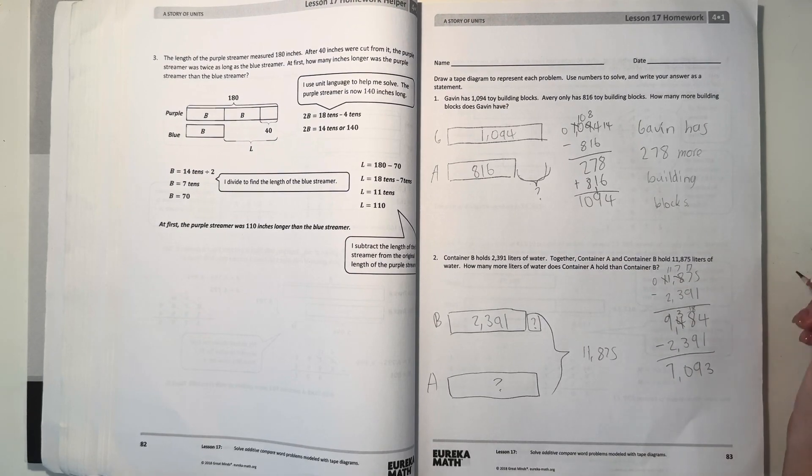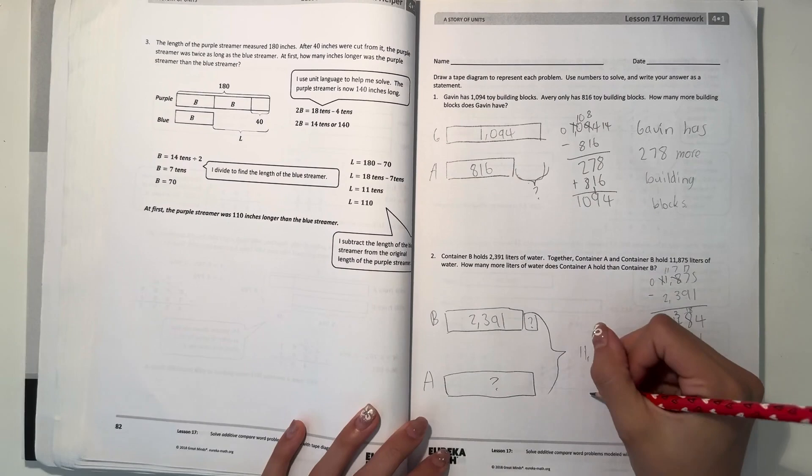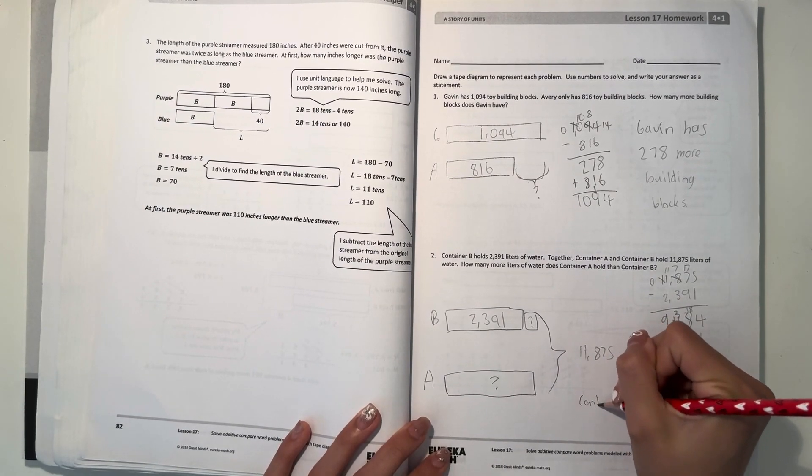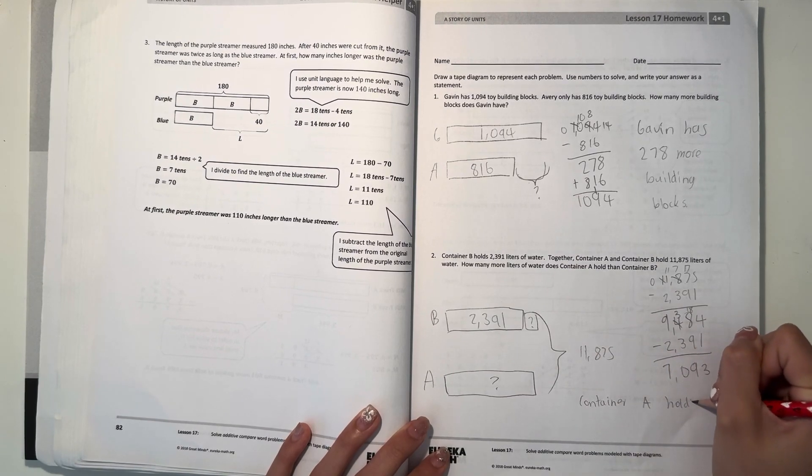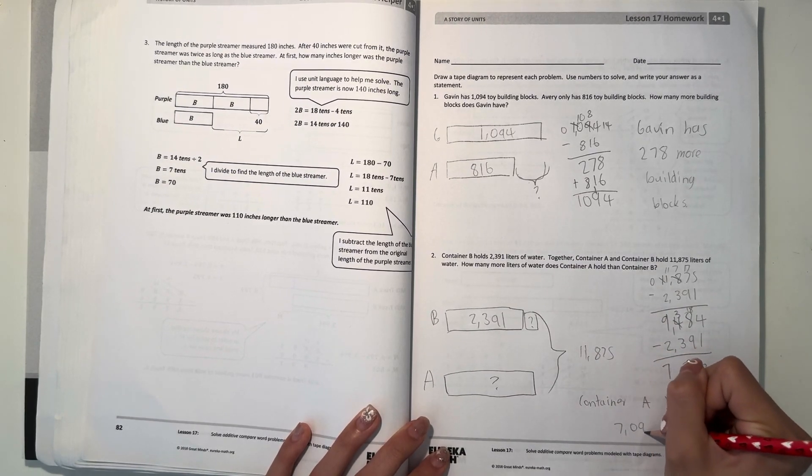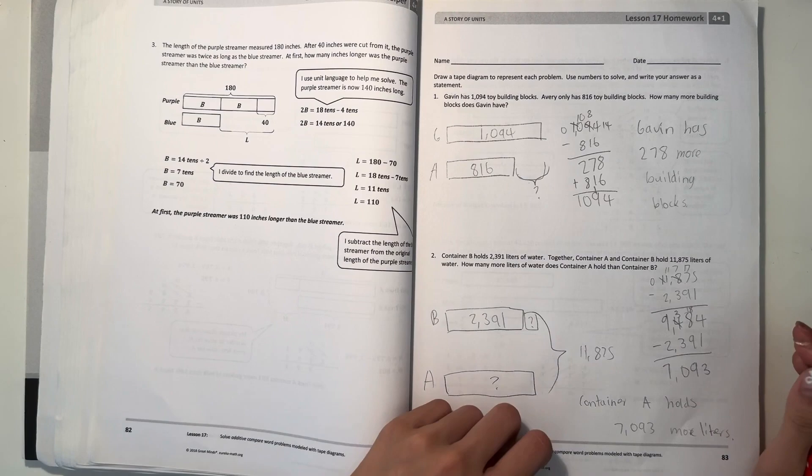So 7,093. So that means container A holds 7,093 more liters.